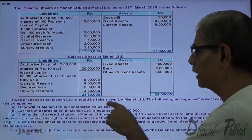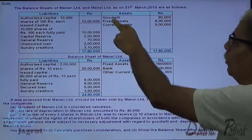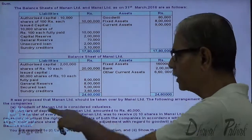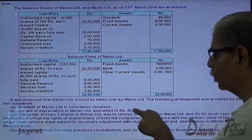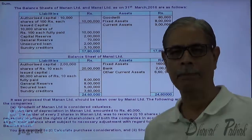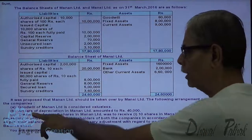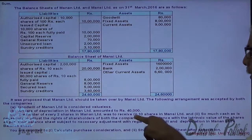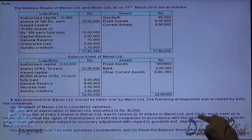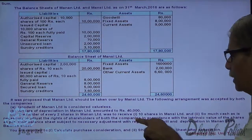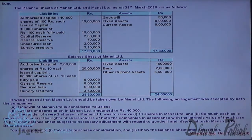Goodwill of Manan Limited is to be considered valueless. Arrears of depreciation of Manan Limited amounted to 40,000 — so the fixed assets are subject to 40,000 arrears of depreciation. The holders of every two equity shares of Manan Limited are to receive 10 shares of Mansi Limited, and so much cash as necessary to equalise the rights of shareholders of both companies in accordance with the intrinsic value of the shares.